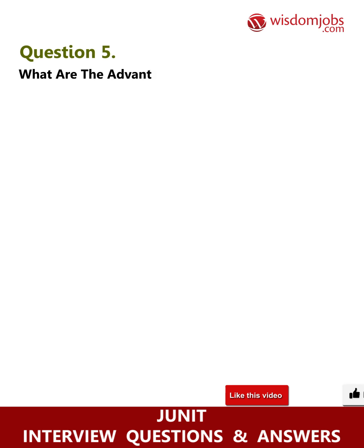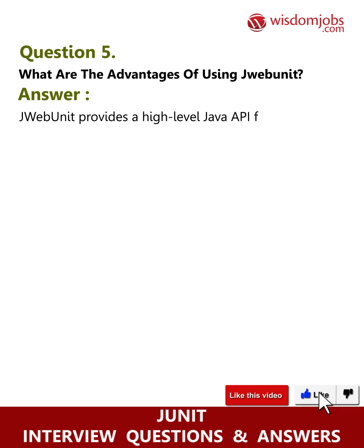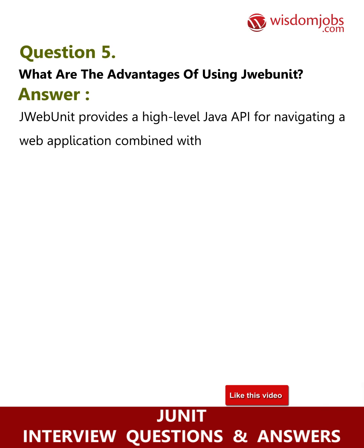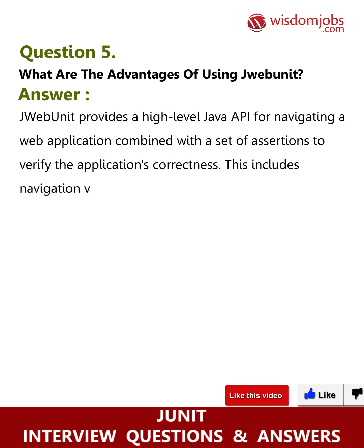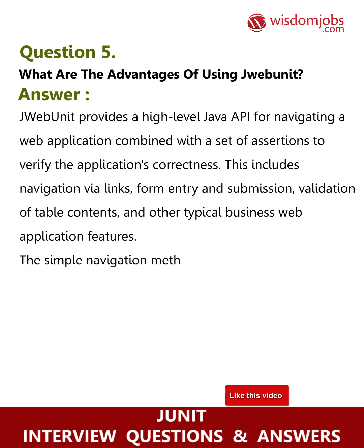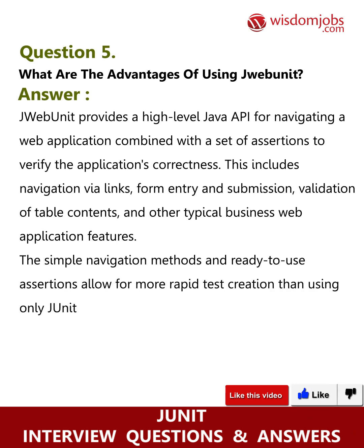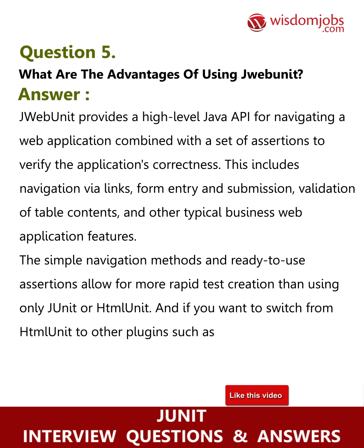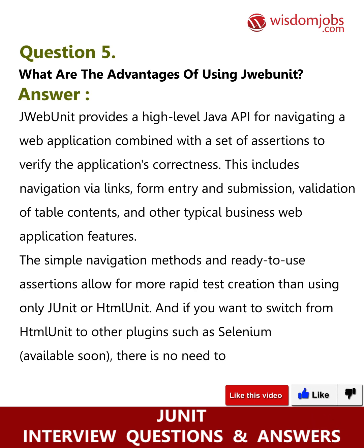Question 5: What are the advantages of using JWebUnit? Answer: JWebUnit provides a high-level Java API for navigating a web application combined with a set of assertions to verify the application's correctness. This includes navigation via links, form entry and submission, validation of table contents, and other typical business web application features. The simple navigation methods and ready-to-use assertions allow for more rapid test creation than using only JUnit or HtmlUnit, and if you want to switch from HtmlUnit to other plugins such as Selenium, there is no need to rewrite your tests.